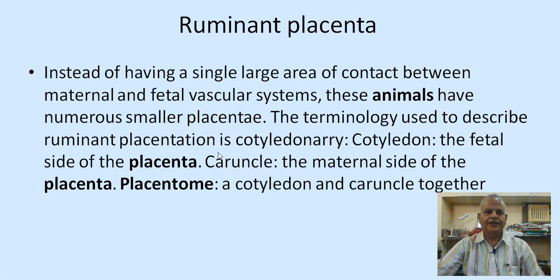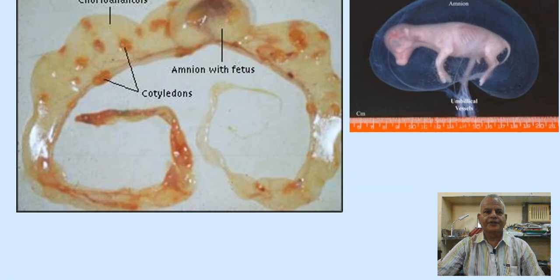The ruminant placenta, instead of having a large single area of contact between maternal and fetal vascular systems, has numerous smaller placentas. The terminology used to describe ruminant placentation is cotyledonary. The cotyledon is the fetal side of the placenta, the caruncle is the maternal side, and together a cotyledon and a caruncle form the placentome.